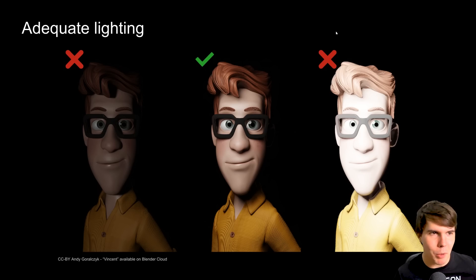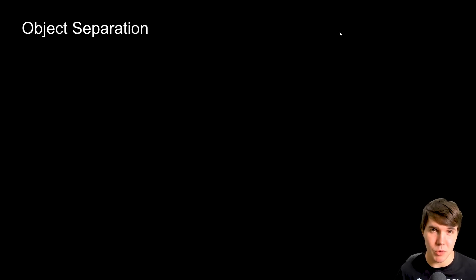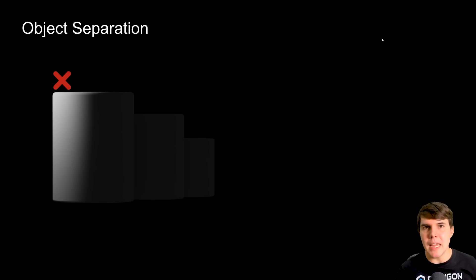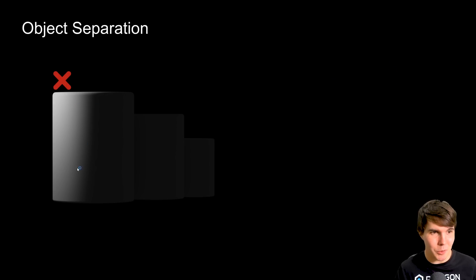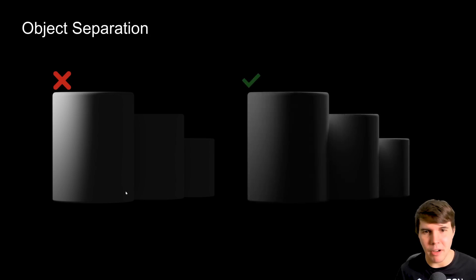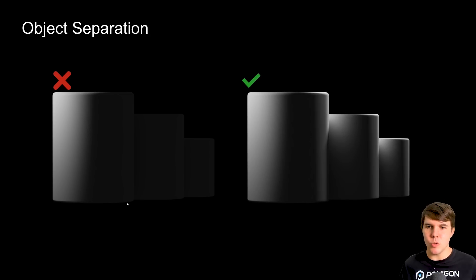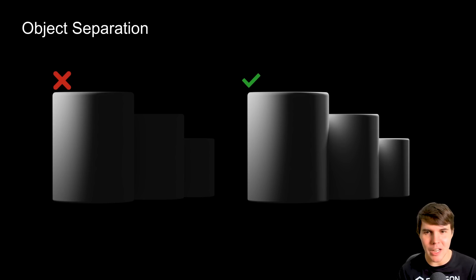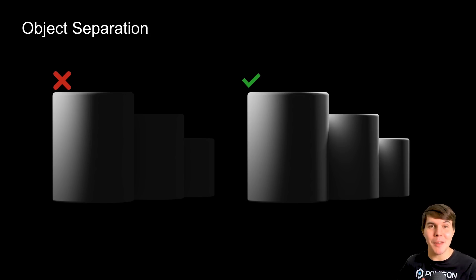Adequate lighting is pretty simple. Next up is object separation, which is what I'll spend the brunt of this video talking about. Object separation is essentially helping people see the separation between objects as well as the background. Some people have heard of rim lighting, but I think it's been long enough that some of us are forgetting what rim lighting actually does.